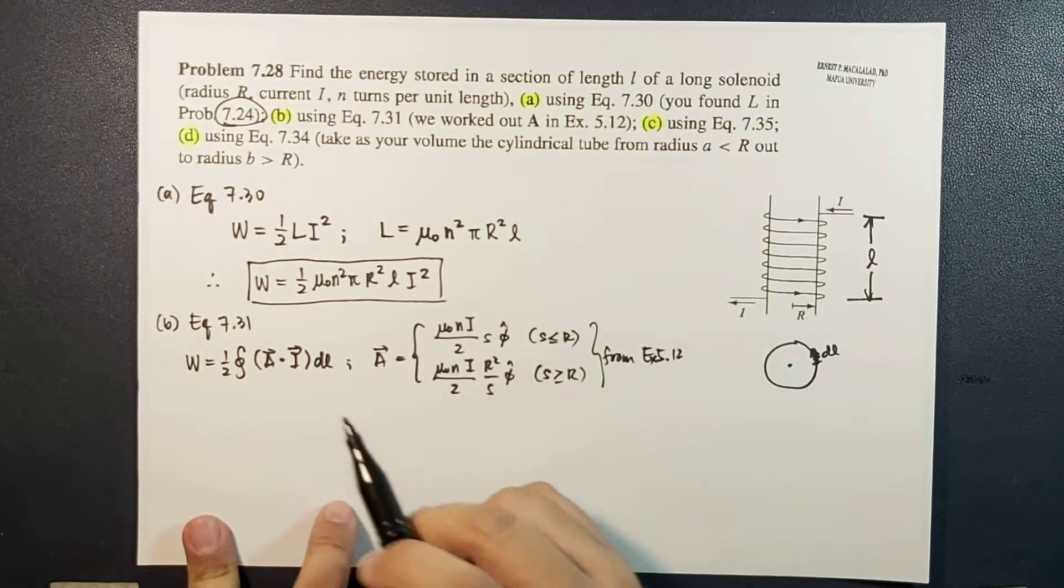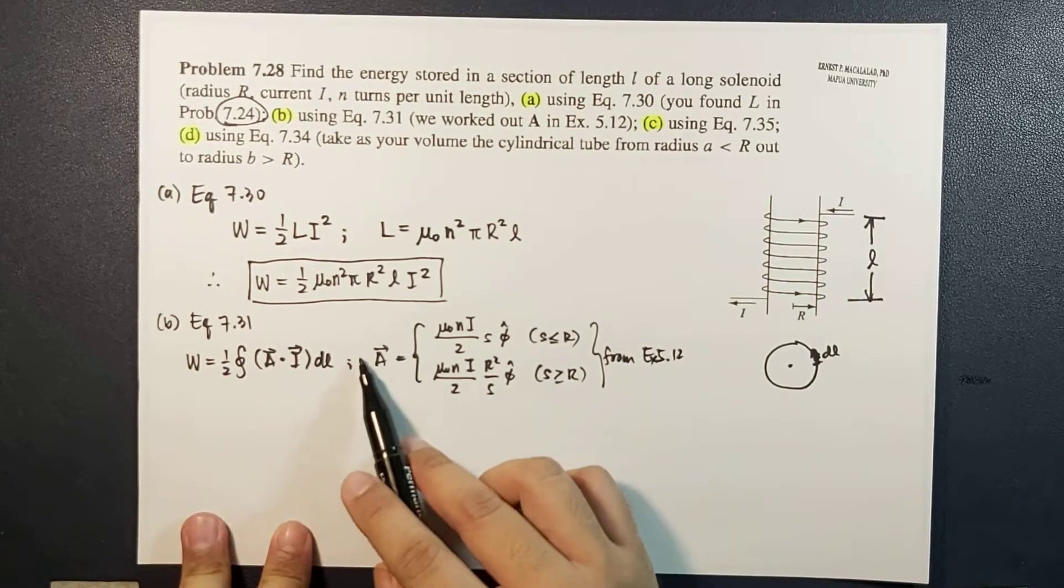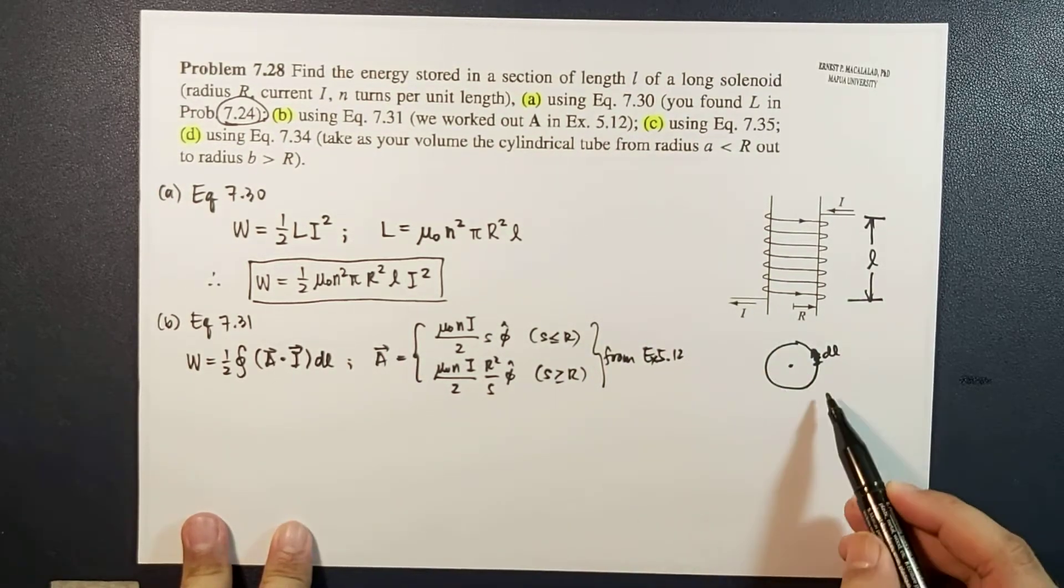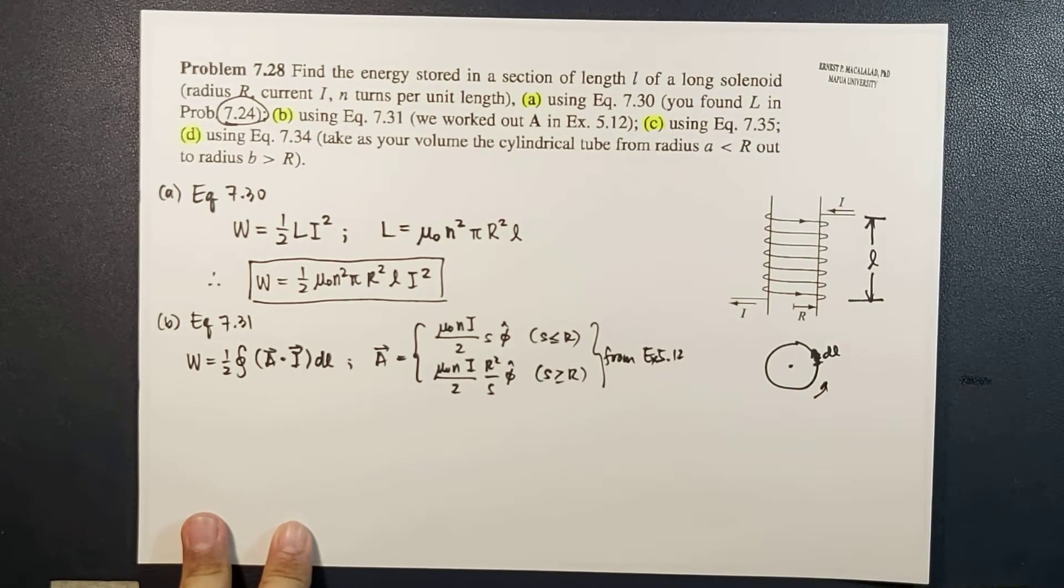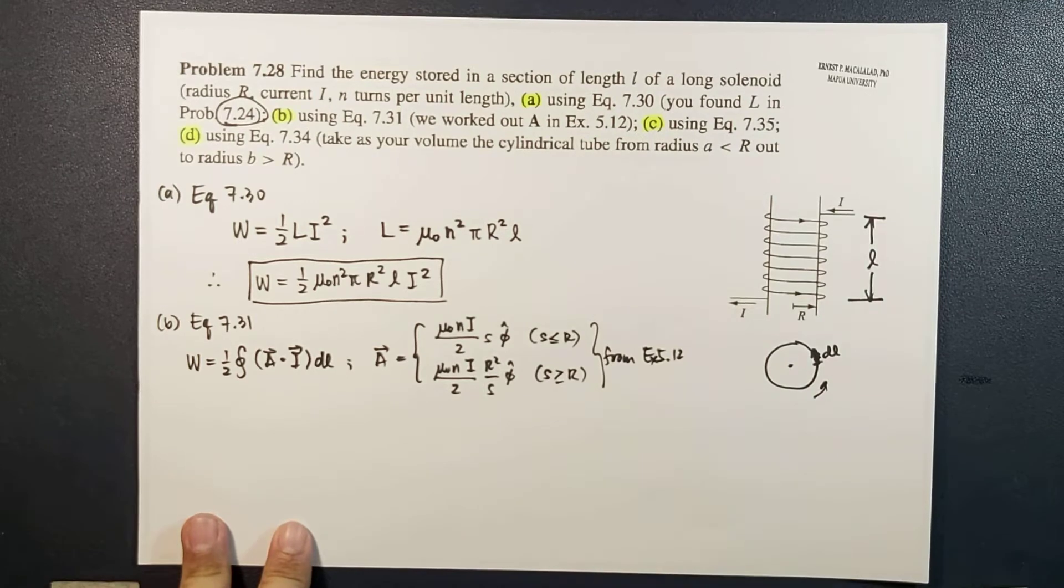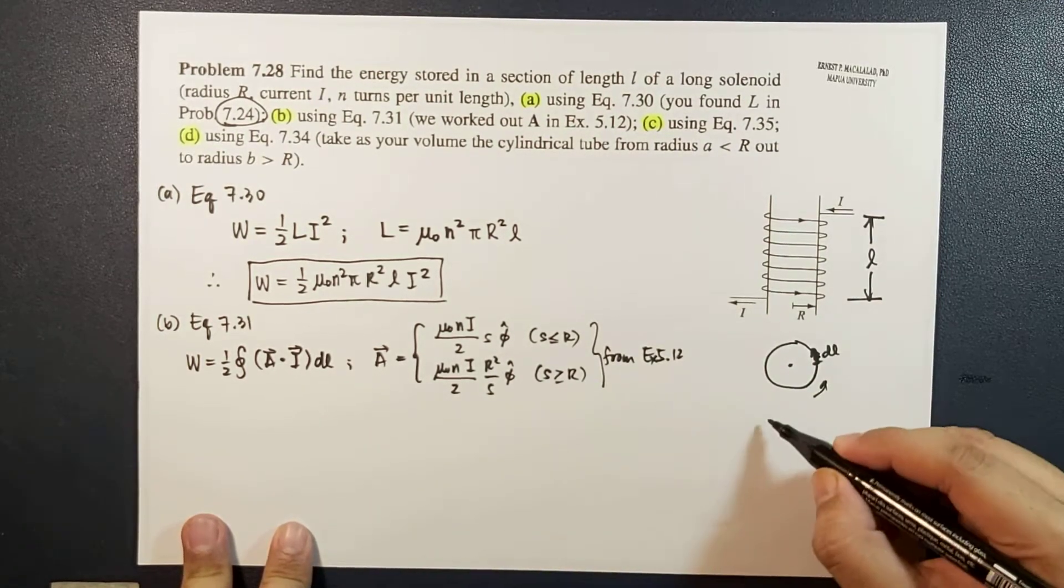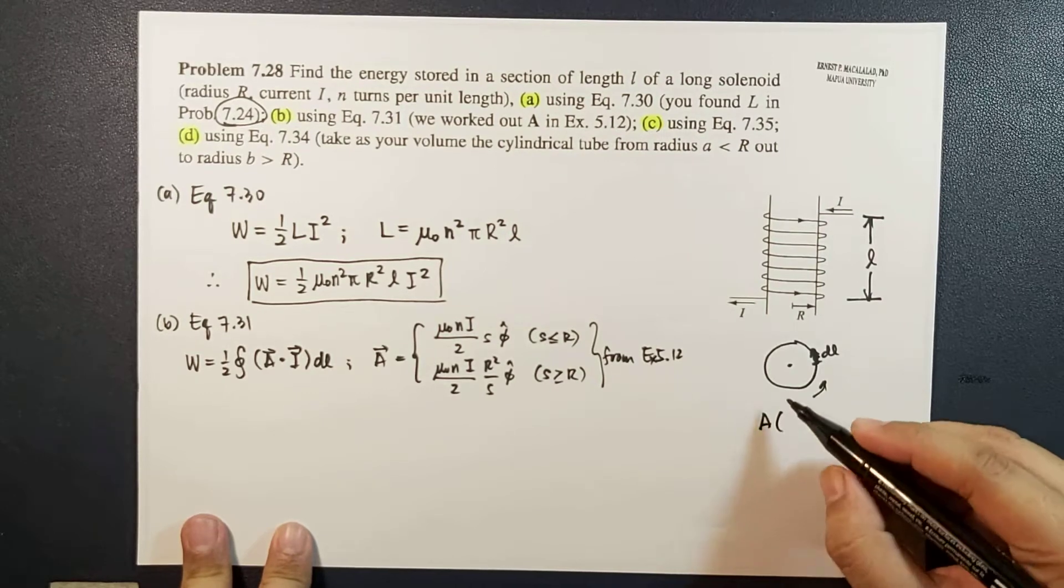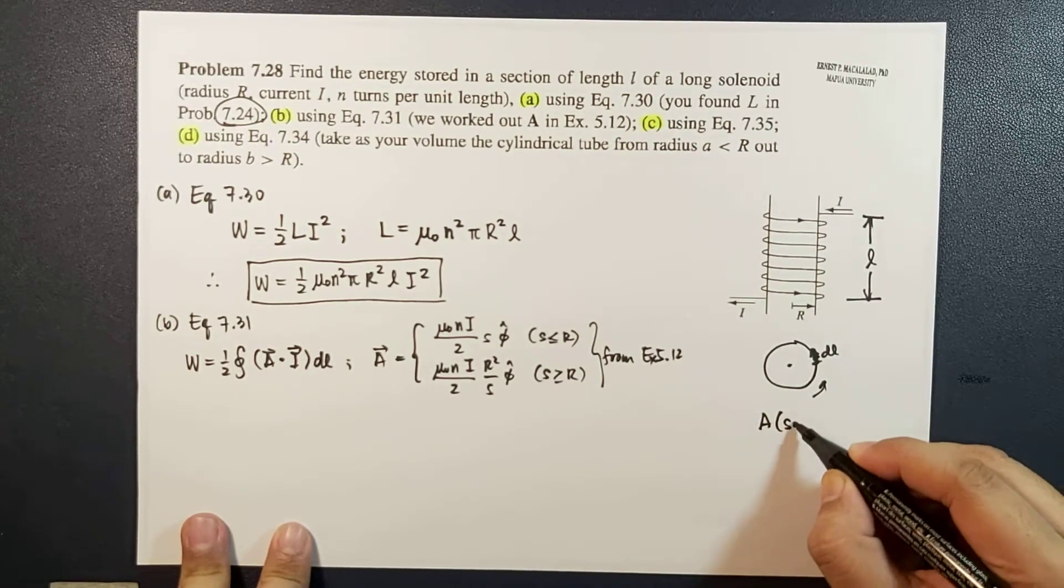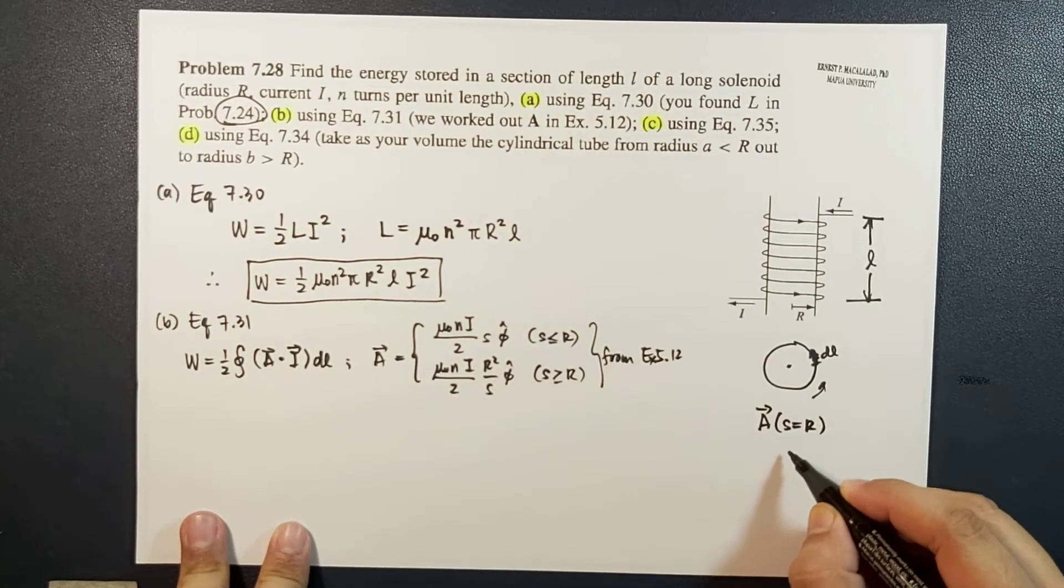Here we're going to take the dot product of this vector potential with the current along this wire. That line integral is along this way, so that means the magnetic vector potential that we're going to choose would be the vector potential at s equal to r.